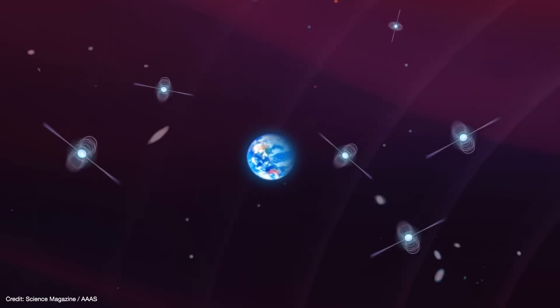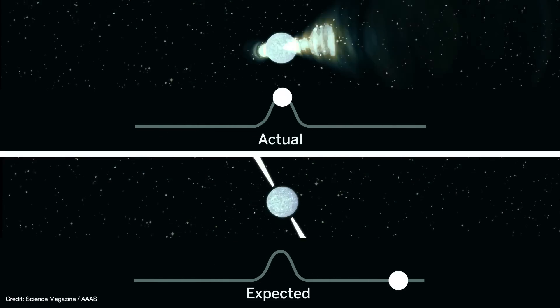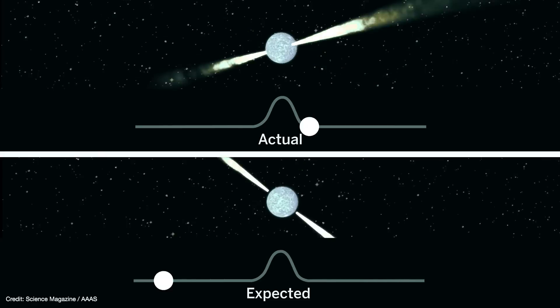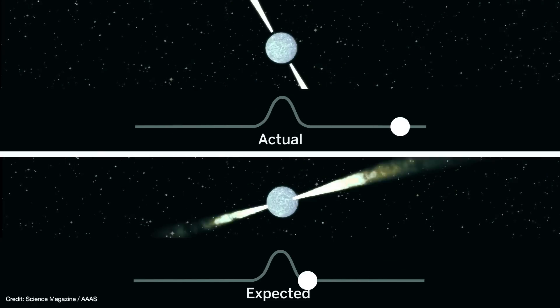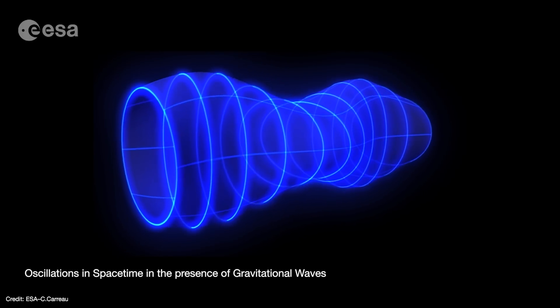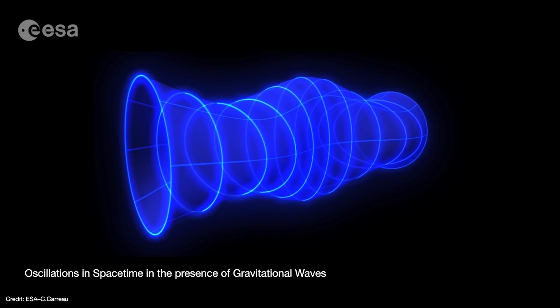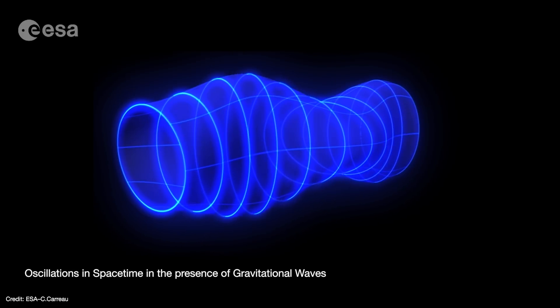So if a gravitational wave were to pass by, it would alternately stretch and compress spacetime at right angles to the wave's motion. And that in turn would cause the time of arrival of the pulses to alternate between arriving later and earlier than normal. Of course, space is three-dimensional, so it will oscillate in multiple directions at once as the wave passes through. Now these gravitational waves are light years in length, so the timing variations of each pulsar takes years to complete as well.